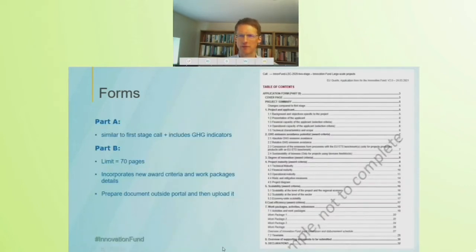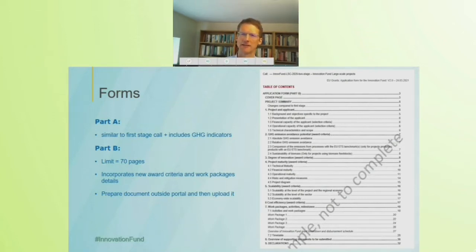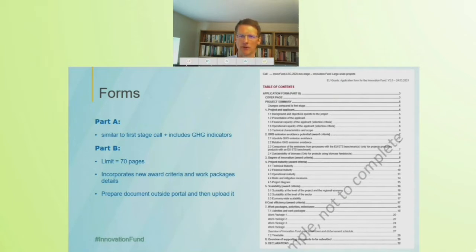Moving on to the forms: the forms have a Part A, Part B, and Part C. Part A is very similar to what you had in the first stage call, with the addition of greenhouse gas indicators. Part B is limited to 70 pages, incorporates the new award criteria — scalability and cost efficiency — and wants information on the particular work packages. Part B has to be prepared outside the portal and then uploaded; you don't complete it online.